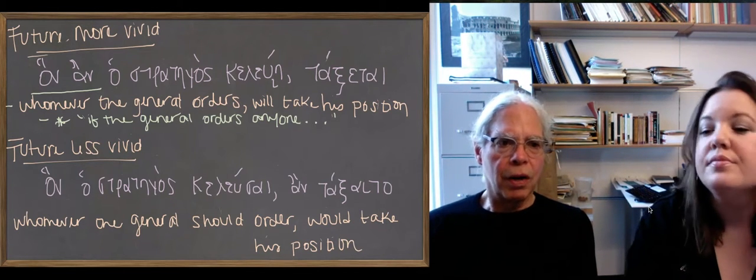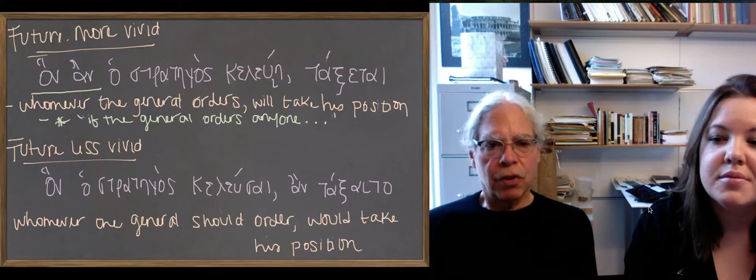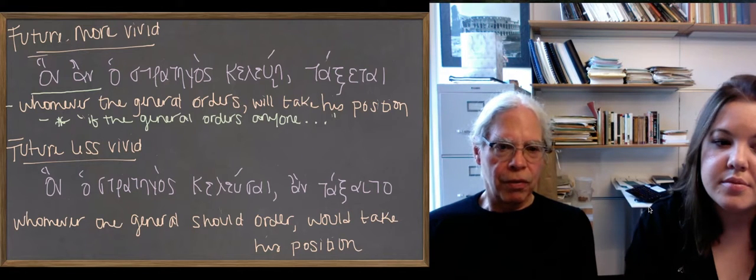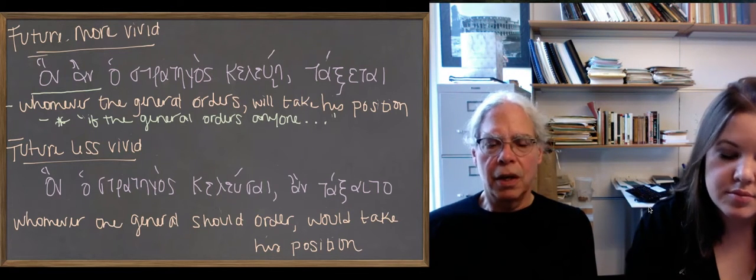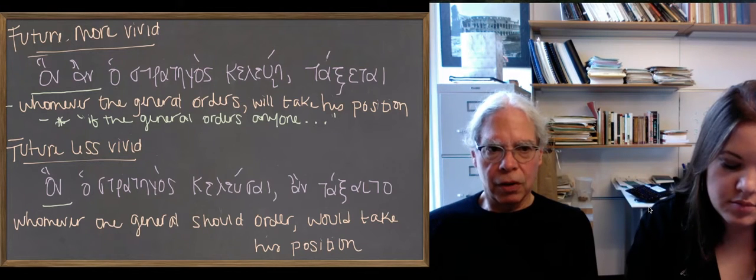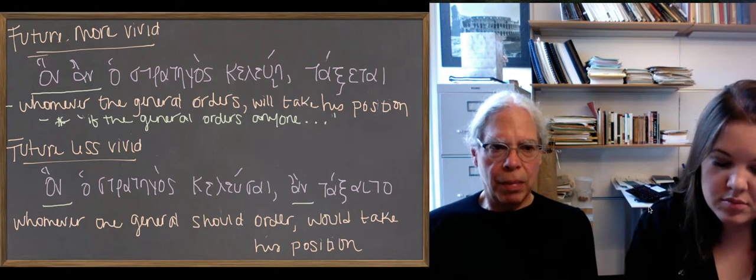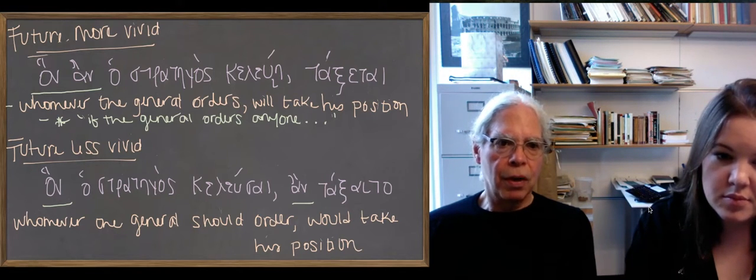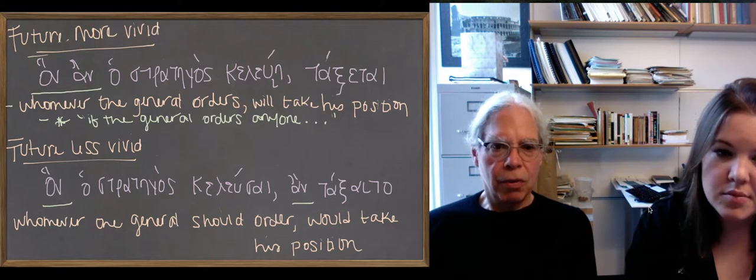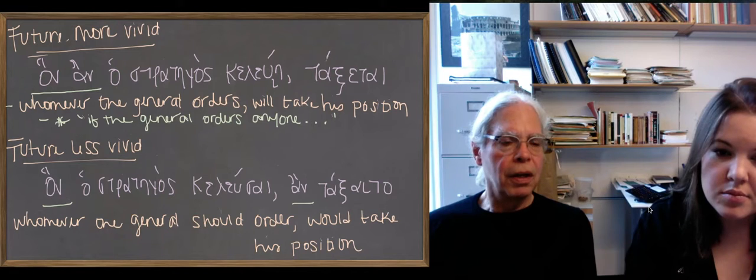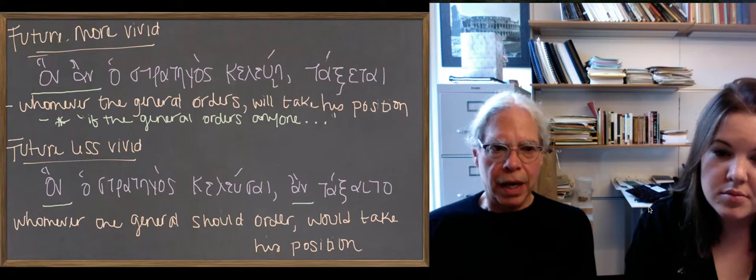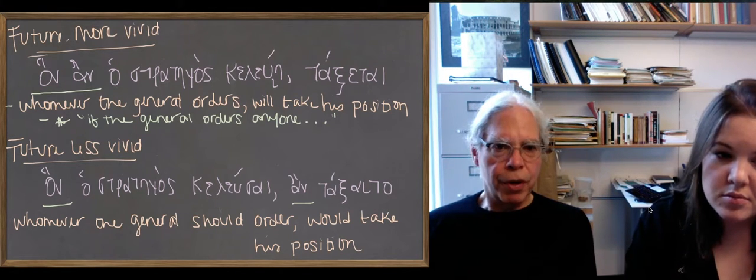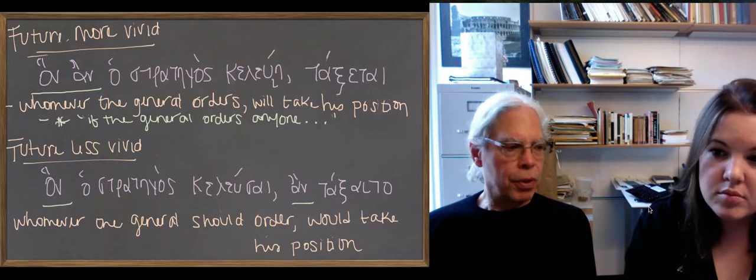In this case, it's masculine because we used Han, or you could use, all right. And then the future less vivid, just the one that uses the optative in the equivalent of the if clause, the relative clause in this case, and on in the optative in the conclusion. So we've got our masculine accusative singular, whomever, anyone whom the general orders, should order, rather, would take his or her position. And you can also translate that as an if clause with an any pronoun. So if the general should order anyone, he or he would take his position.